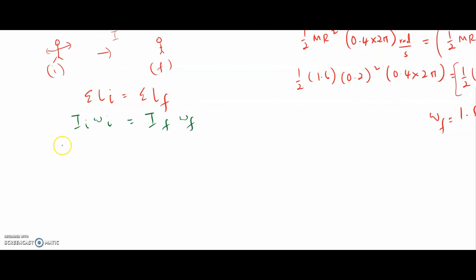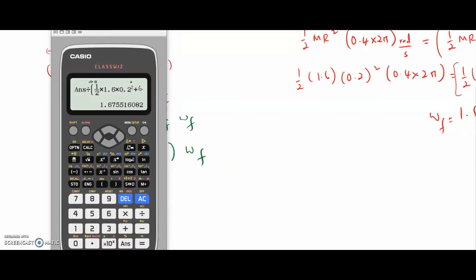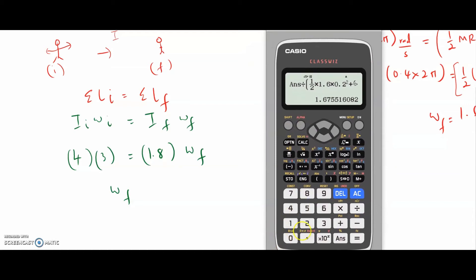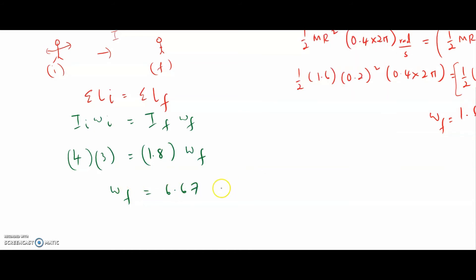They already give you the moment of inertia: initially I = 4 kg·m², omega = 3 rad/s. When arms are drawn in, I = 1.8 kg·m². So: 4 × 3 = 1.8 × omega_final, giving omega_final = 12/1.8 = 6.67 rad·s⁻¹. That is your answer for part b.